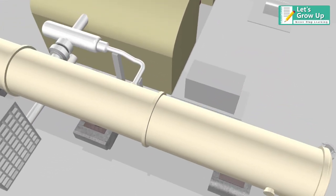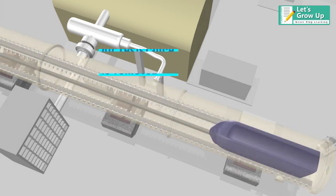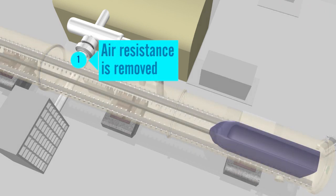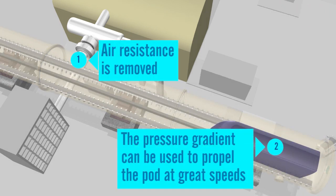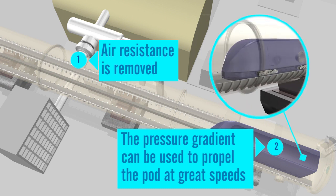The low pressure tube has few benefits. Air resistance is removed, and the pressure gradient can be used to propel the pod at great speeds.